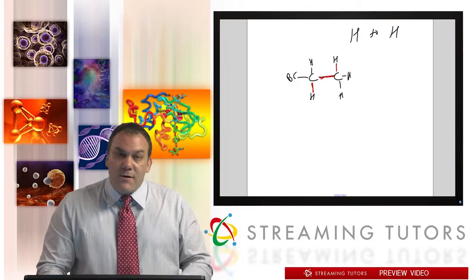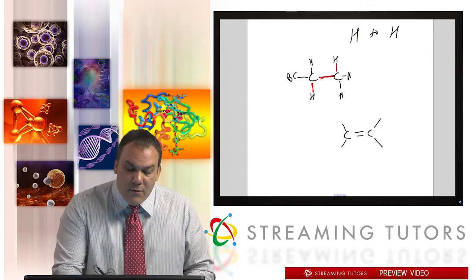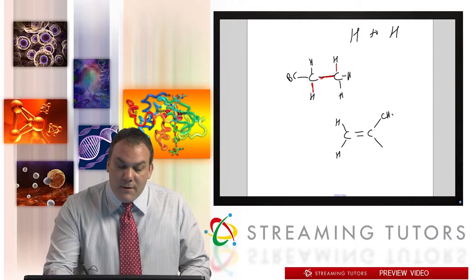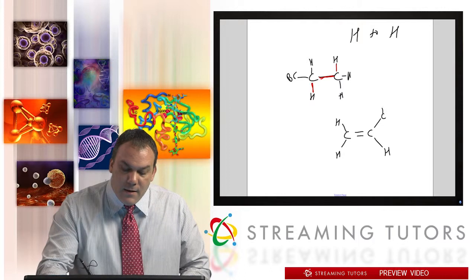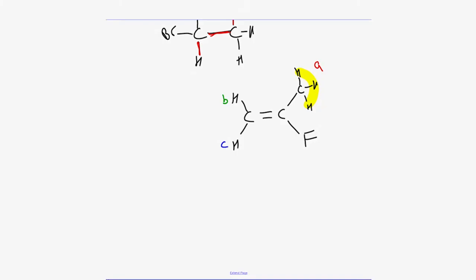Neighbors must also be non-identical to cause splitting. Here's an example: consider a molecule where we label one H on a carbon as A, and on the adjacent carbon we have H-b above and H-c below, plus a fluorine. Because there's no free rotation, the H above and H below are not seeing the same environment — they're diastereotopic — so they are different. These are three distinct H's giving three readings on a chart. When asking who splits whom, you apply both rules: non-identical and within three bonds.